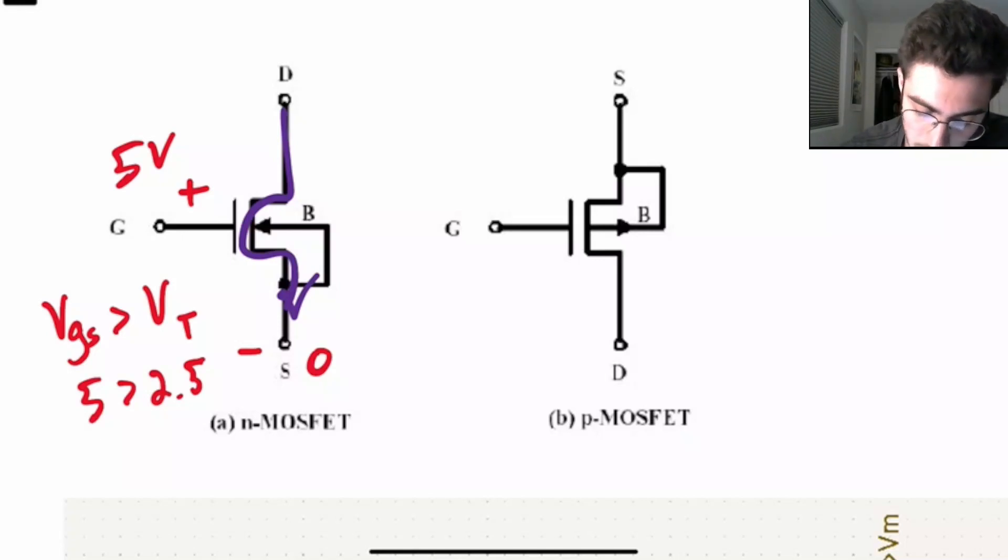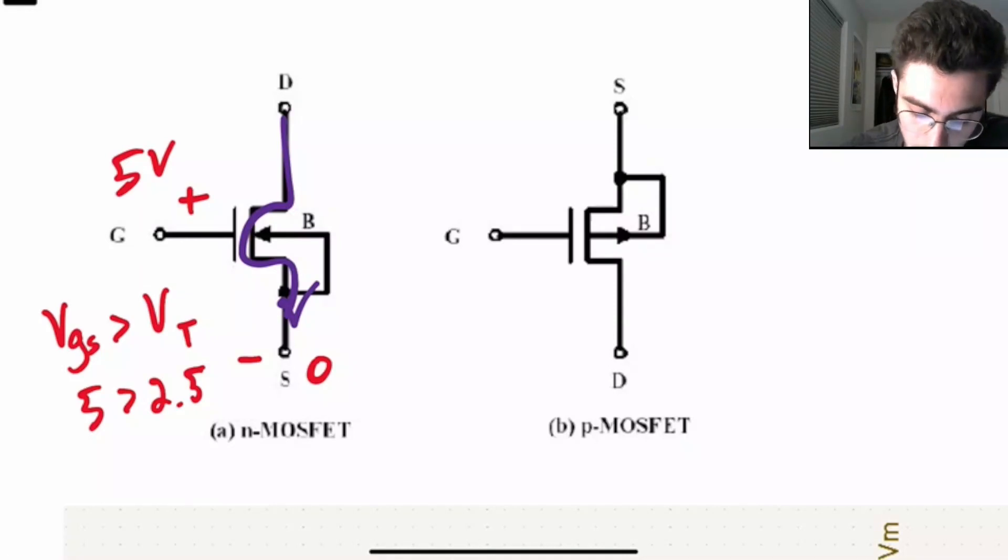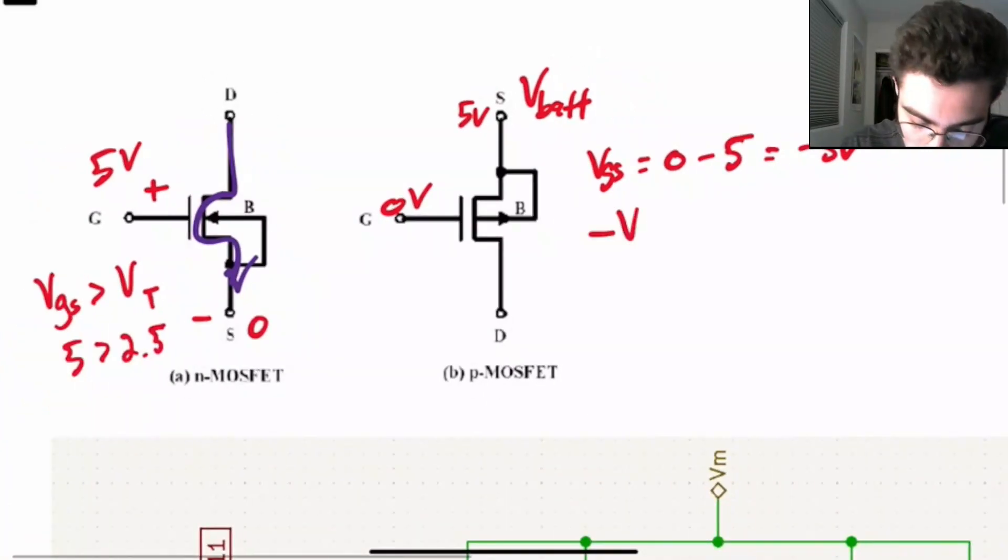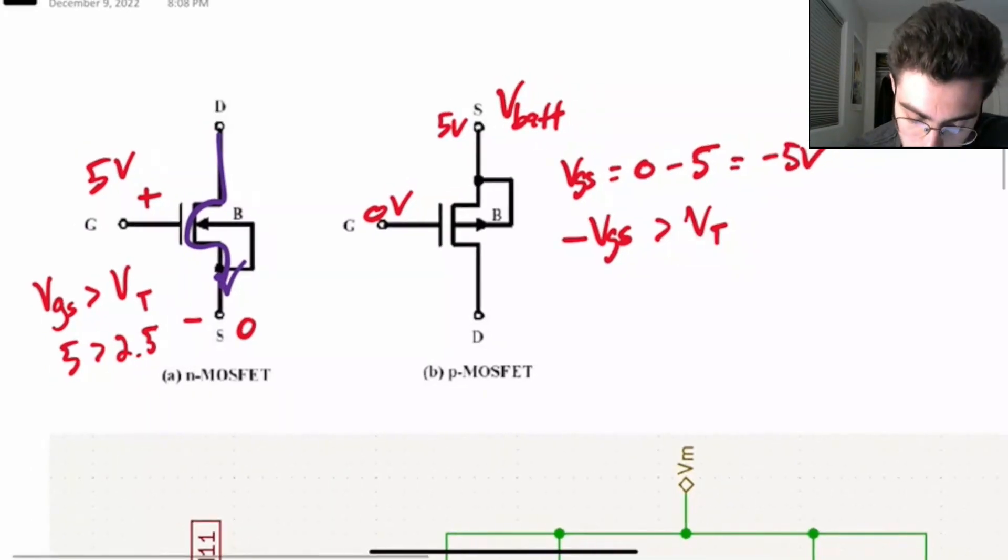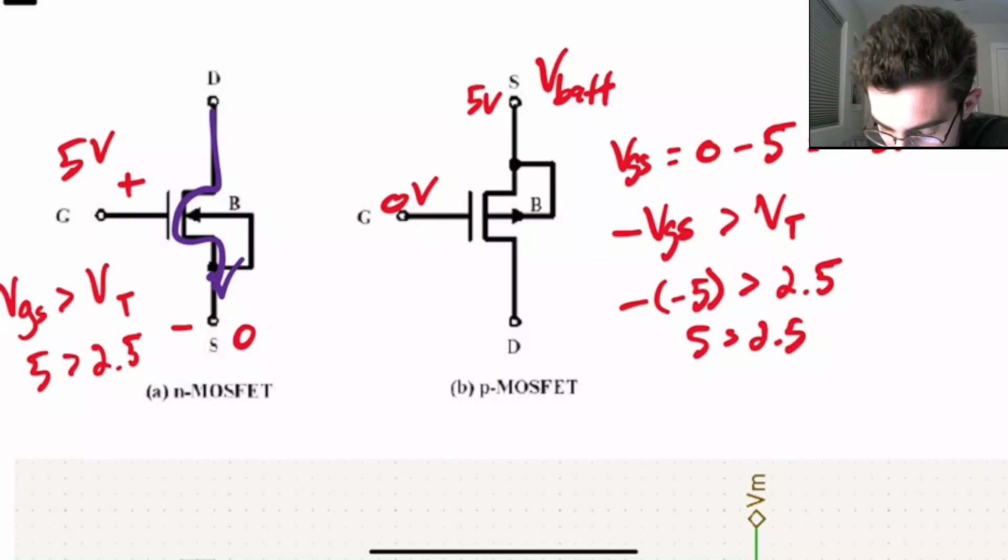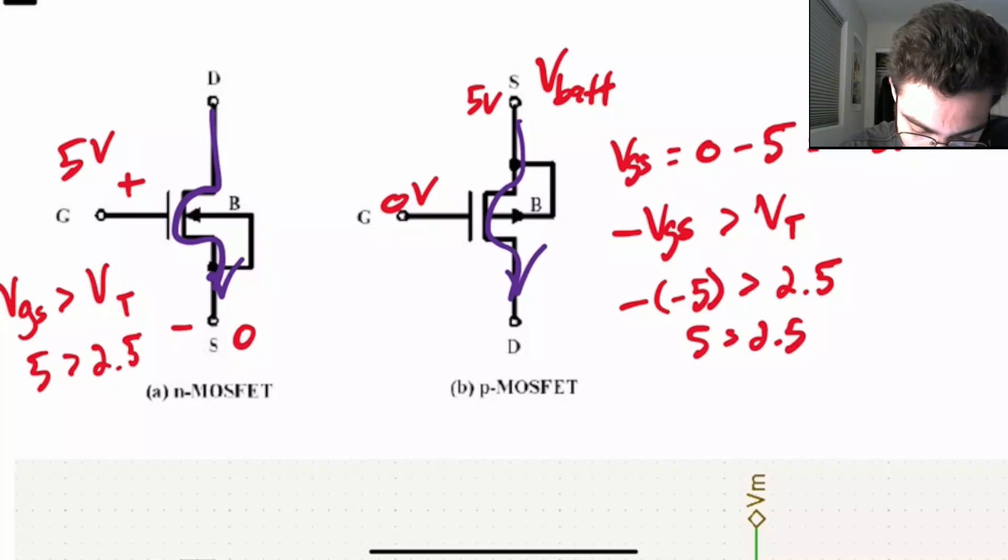And the PMOS is very similar. The only difference is usually people connect a power source. We'll call this VBAT for battery. And the voltage difference is usually negative for the PMOS. So you would have, let's say, 5 volts up near the source. And you would have 0 volts down here. So VGS would be 0 minus 5, which is going to be negative 5 volts. So you would take negative VGS is greater than your voltage threshold as the condition to activate the switch. So in this case, we would have negative of negative 5, greater than, let's say, it's 2.5. 5 is greater than 2.5. So you're going to get a conducting path between the drain and the source.